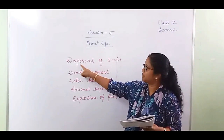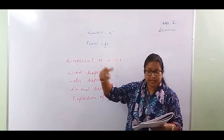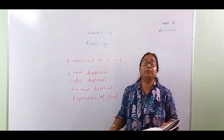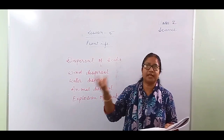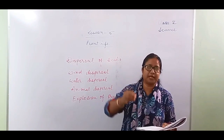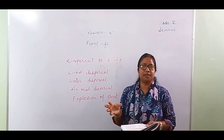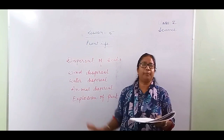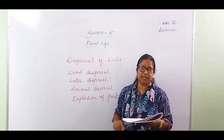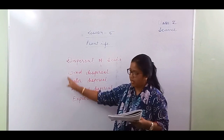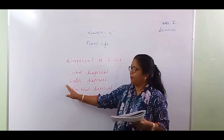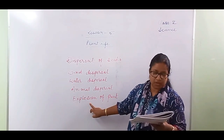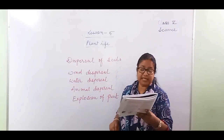Another topic from this chapter is dispersal of seeds. Dispersal means scattering. Seeds are scattered by human beings, animals, or birds — they take seeds away from the parent plant and throw them far away. This is called dispersal. Seeds can be scattered by wind, water, animals, and by explosion.